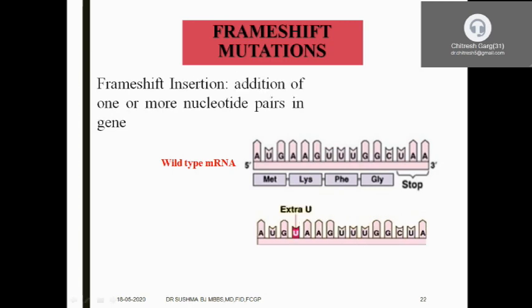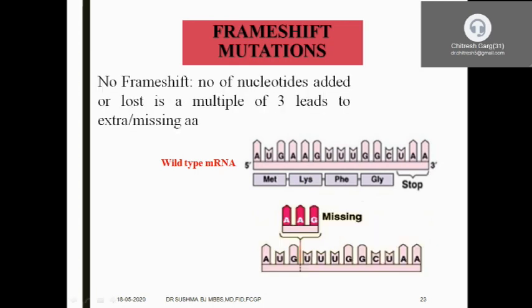Frame shift insertion: in the wild-type mRNA — methionine, glycine, phenylalanine, glycine followed by a stop codon — after AUG there is AAG, but an extra uracil codon is inserted, shifting the reading frame. This is frameshift insertion. If the number of nucleotides added or lost is a multiple of 3 — a no-frameshift mutation — then one particular amino acid is missed. For example, AUG coding for methionine, followed by AAG for lysine, followed by UUU for phenylalanine: if the entire AAG is missing, lysine is absent. This is called a no-frameshift mutation.